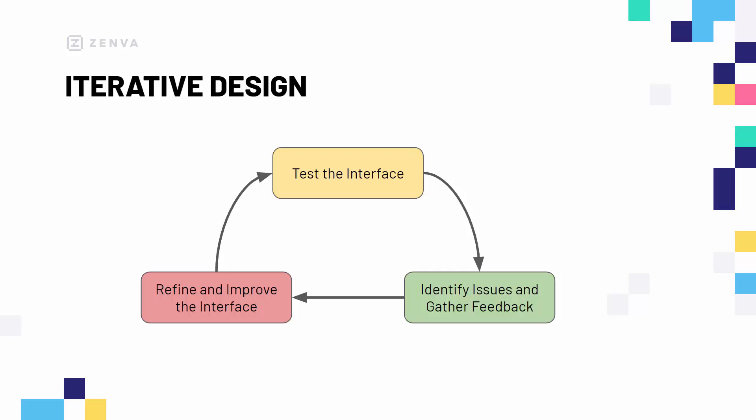It looks sort of like this: we first test our interface, we then gather issues and gather feedback, different improvements we might want to make, then we go ahead and refine the interface, improve it, make changes, remove things that need to be removed, and then we test the interface again, identify issues, refine and improve, and repeat.